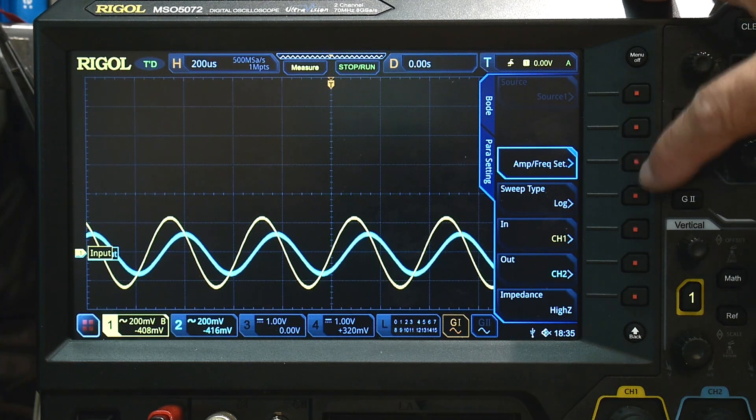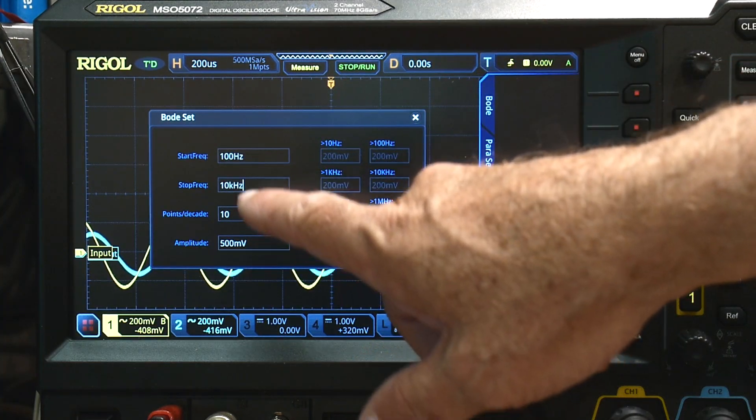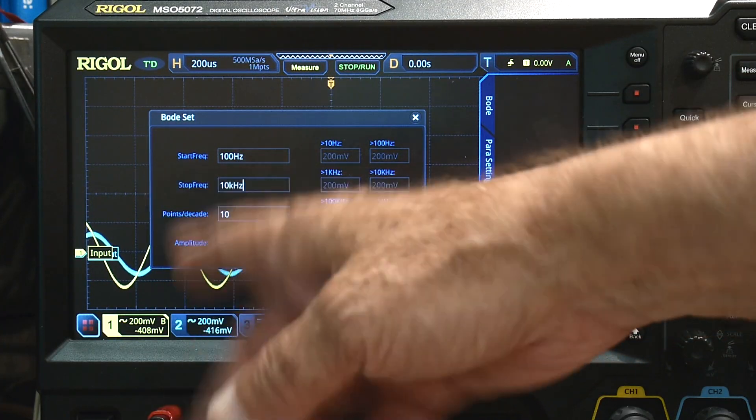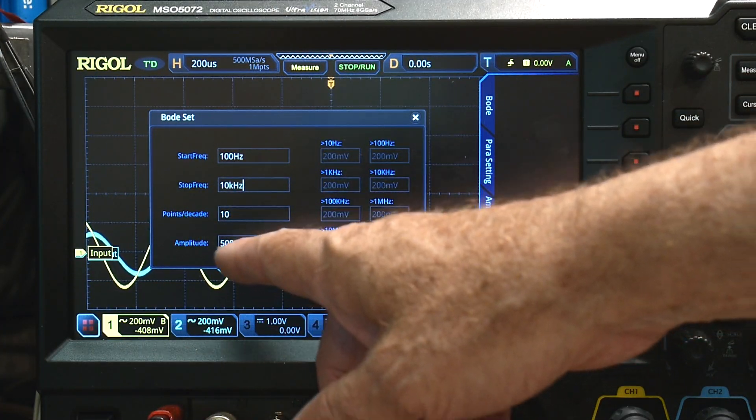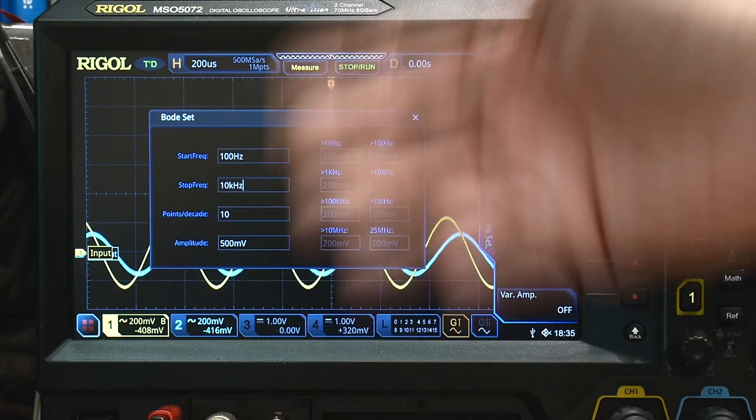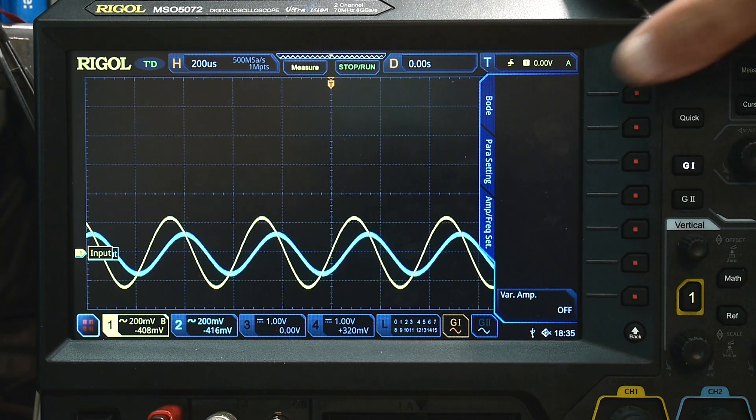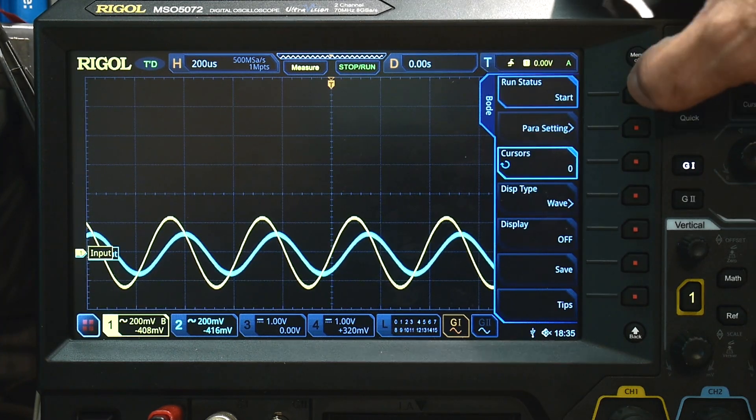And we're going to say, we want to sweep from 100 hertz to 10 kilohertz, and we're going to make 10 measurements per decade. So 10, 10, and we're going to output 500 millivolts. And so that's the setup for the Bode plot. And then if we say start...